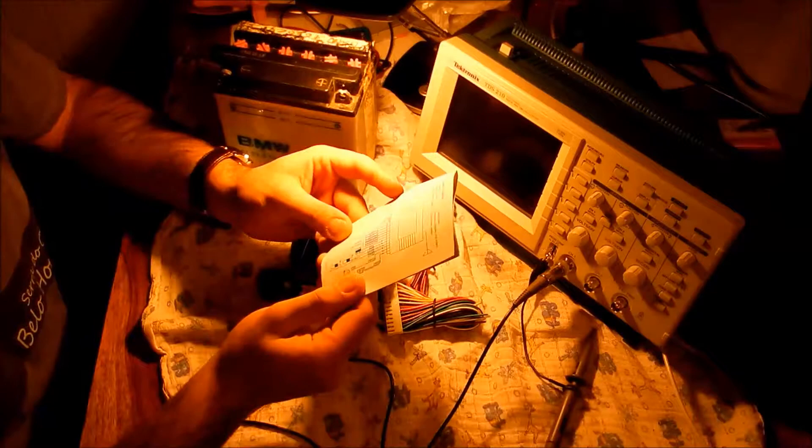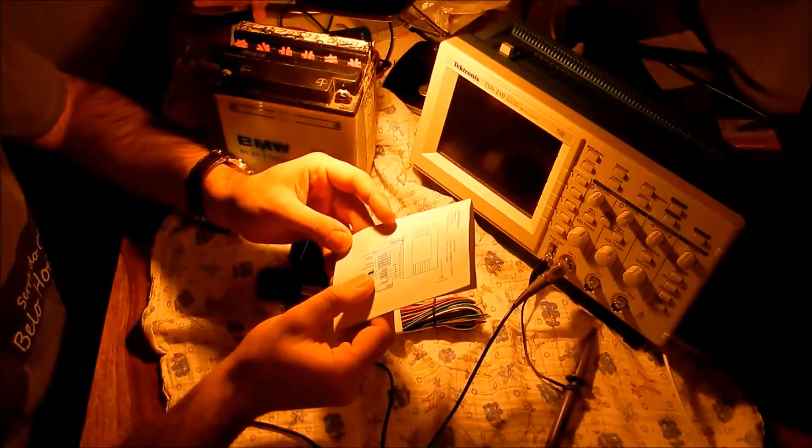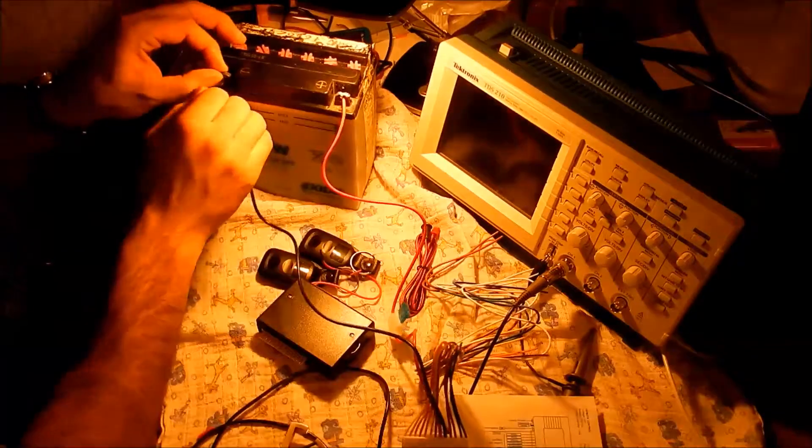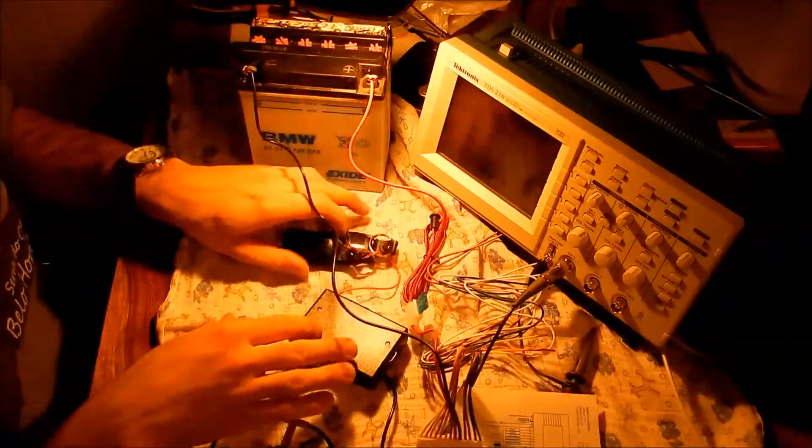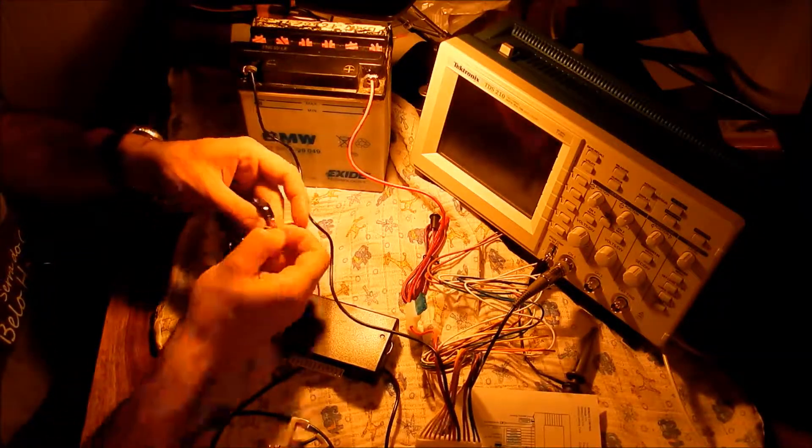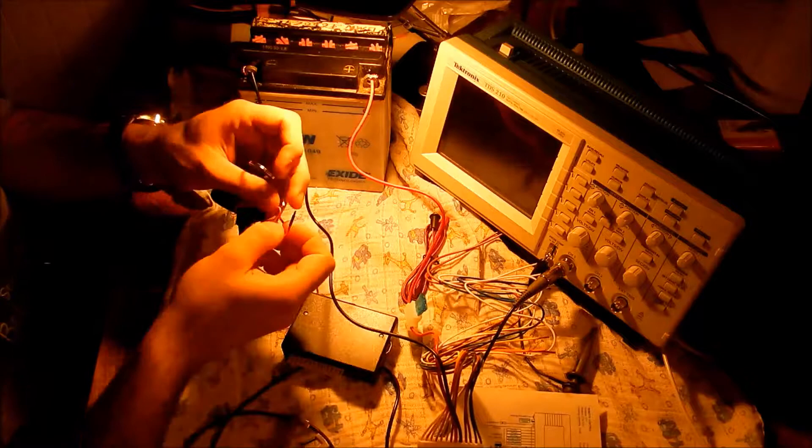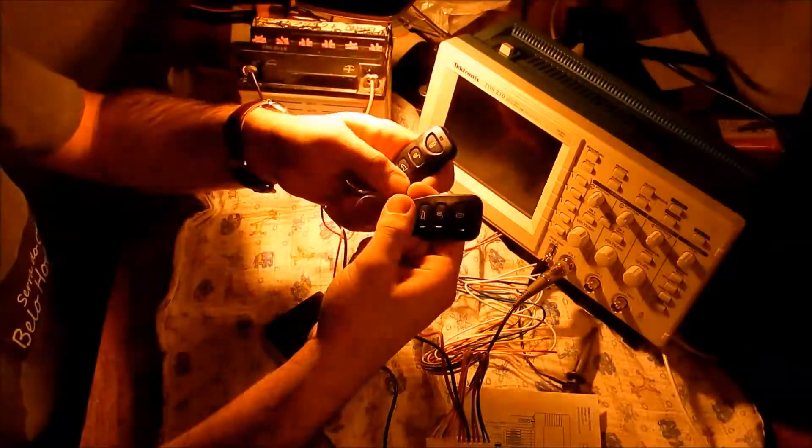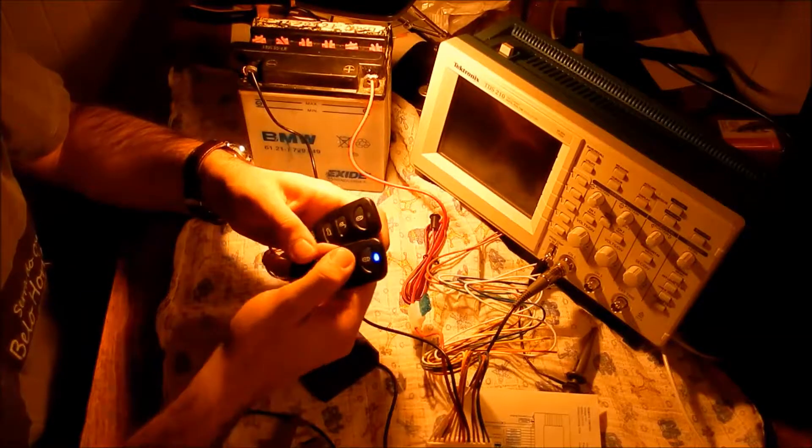Let's see, here is the wiring diagram. Black and red are positive and negative. Let me open this first. We also have an antenna thread thing here and two remote controls with trunk opening.